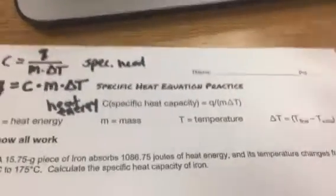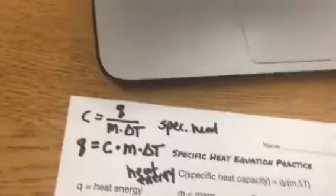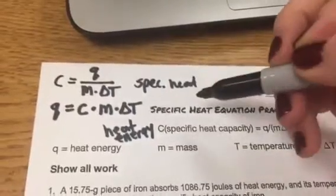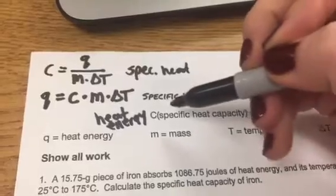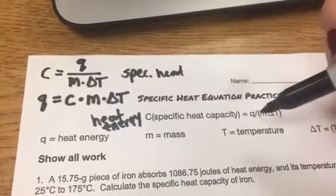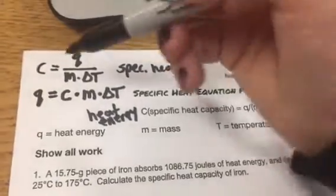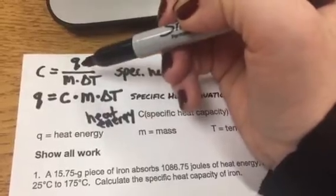Specific heat equation practice. The first thing we need to do is talk about the equations for specific heat. The one they give you already written here, specific heat capacity equals heat divided by mass times change in temperature. I don't really like the way that looks, so I've rewritten it up here.